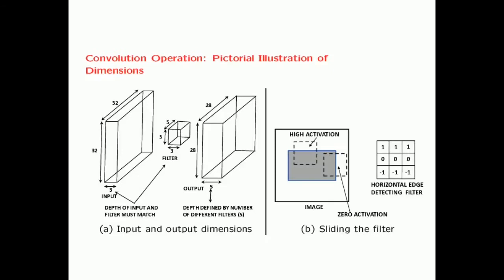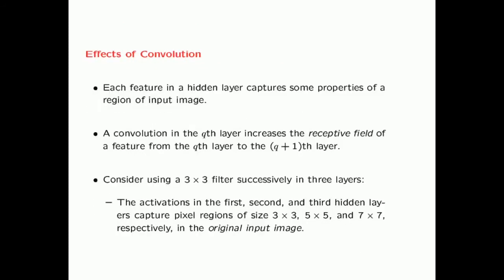The reason for shared weights is that you want to find the same feature — for example, a horizontal edge — everywhere in the image. So you slide the same filter everywhere and get a high activation wherever that feature is detected. The primary effect of convolution is that each feature in a hidden layer captures some properties of a region of the input image, and a convolution in the Q-th layer increases the receptive field from layer Q to layer Q+1.